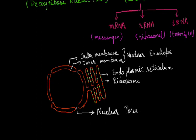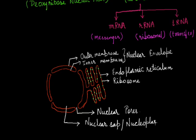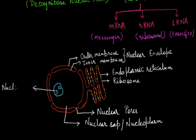After the nuclear envelope, the next part is the nucleoplasm or nuclear sap, which is the fluid portion present inside the nucleus. Inside the nucleus there is also a membraneless structure called the nucleolus, which is roughly rounded or spherical in appearance.